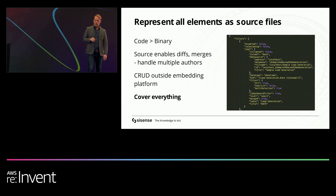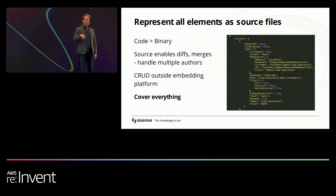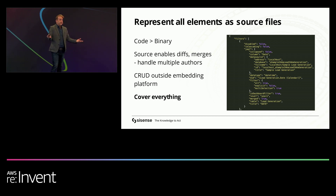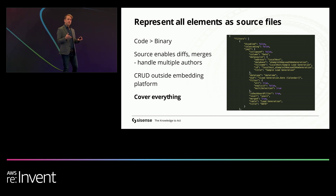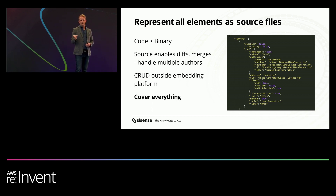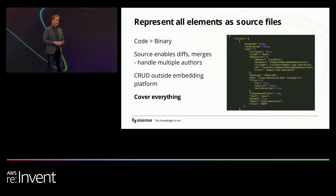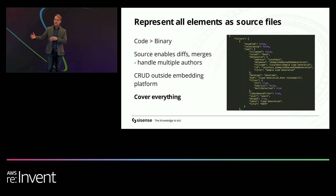It's really important that when you're asking analytics vendors whether they do this, you ask: do you cover 100% of the content I can make in your platform? Some BI vendors have some source control support, but they usually cover just semantic models — just one piece of the stack. That's fine for analytics, because semantic models are the really expensive thing to build. But if you're embedding, you're just not getting coverage, and you won't be able to actually get the benefits of a DevOps methodology.